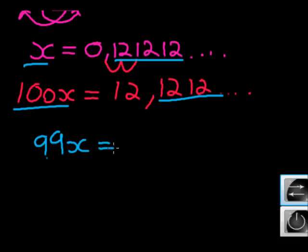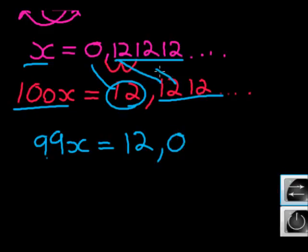And on this side, I get 12, 12 minus 0 is 12. And on this side, I get 1 minus 1 is 0. 2 minus 2 is 0. 1 minus 1 is 0.